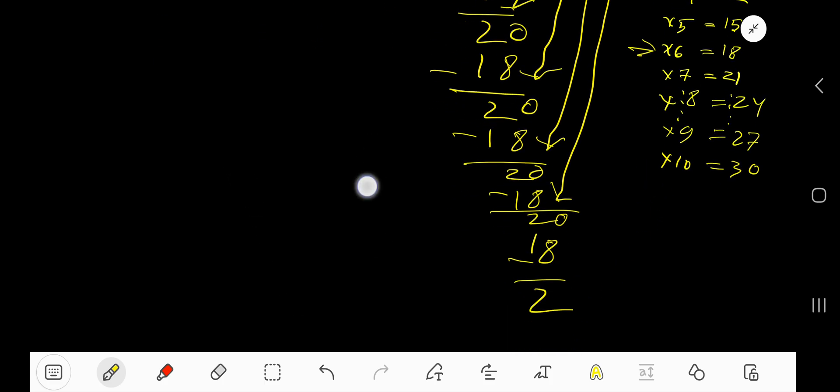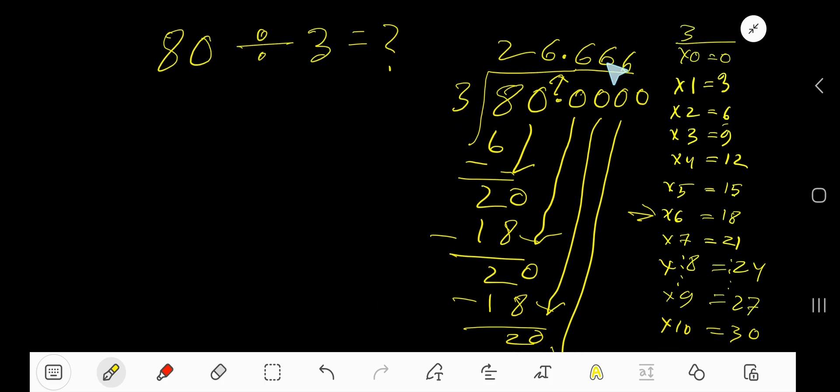You can bring down more 0. But since we have gotten 3 decimal places after decimal, we can place here 3 dot.